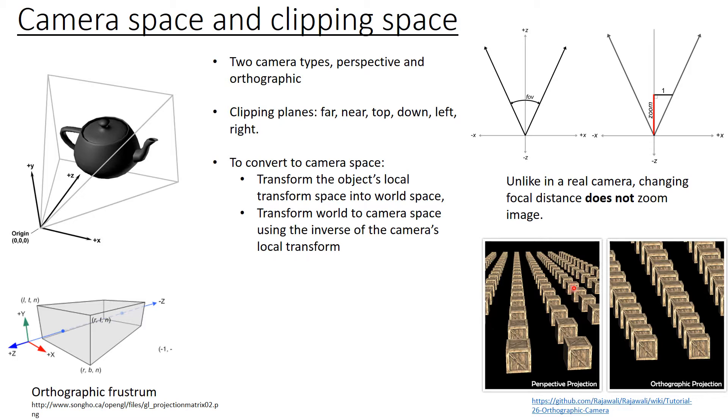We have two types of camera. Perspective, where you have depth information, and orthographic, with no depth information. Note that the planes will intersect a point in a perspective camera frustum. Whereas an orthographic frustum, it is basically just a rectangle, a cube.